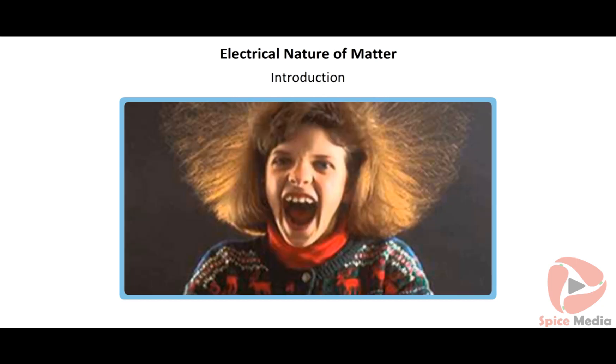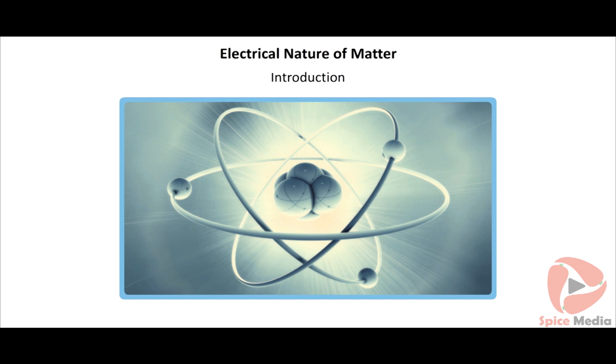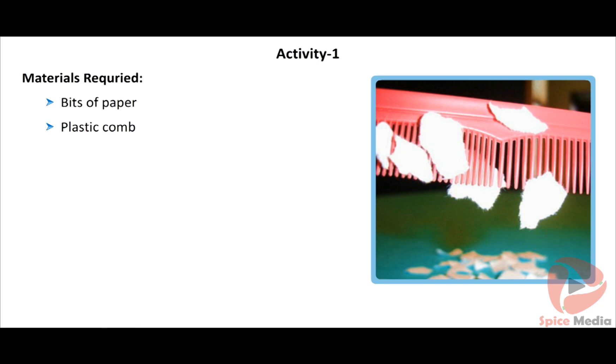A heart is an electric device that keeps its steady beat with electric synchronization. These examples all involve the electrical nature of matter. Activity one: materials required — bits of paper and a plastic comb. Take a few bits of paper and place them on the table. Comb dry hair repeatedly with a plastic comb, then immediately bring the comb close to the small bits of paper. The comb attracts the small bits of paper. When two objects are rubbed, they become electrically charged.